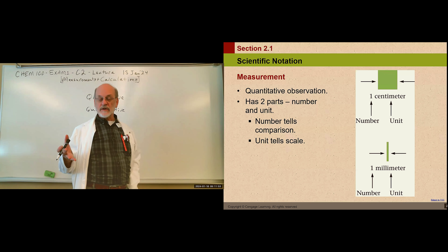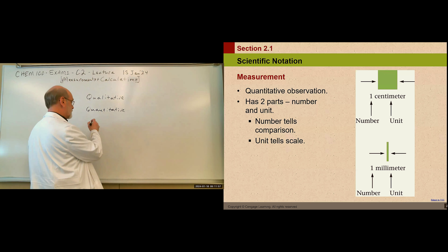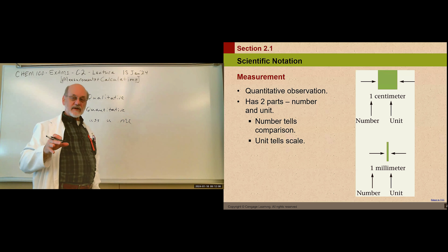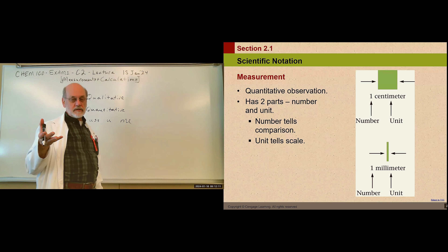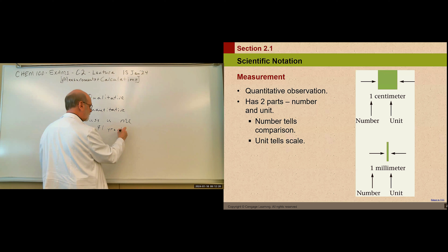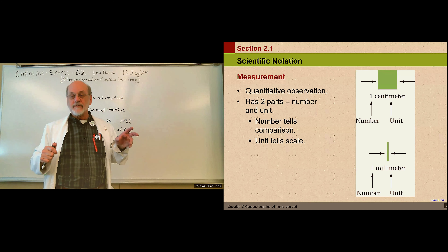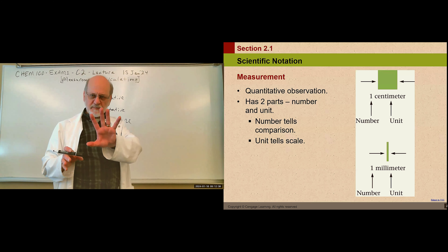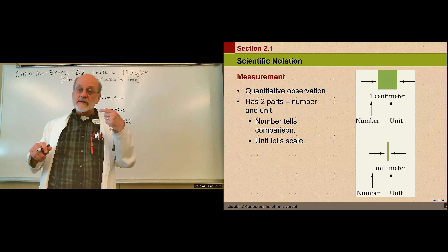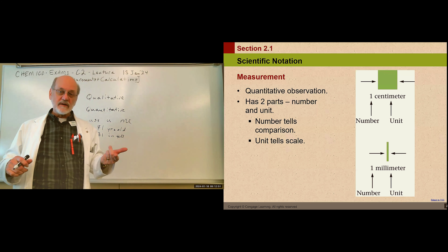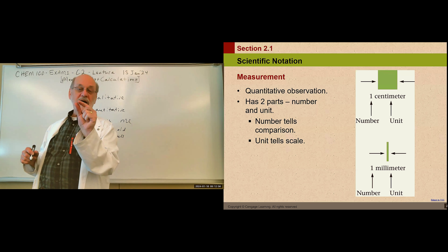If I say 71 and don't tell you what 71 means — the units of measure — then the sky's the limit. It could be anything. I could be 71 years old, or I could be 71 inches tall, and the units of measure make a huge difference in what that 71 means. The unit of measure tells you what the number means in terms of size. If I say one centimeter, I mean something about like that; if I say one millimeter, I'm talking about something even smaller.